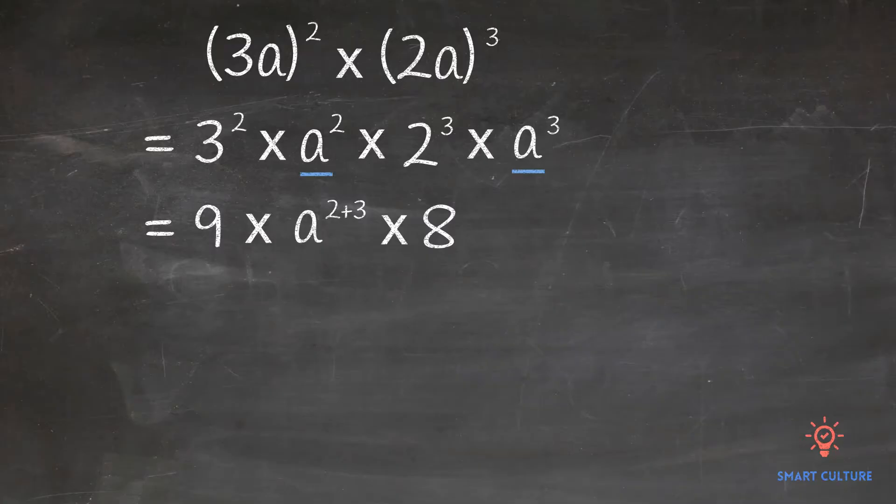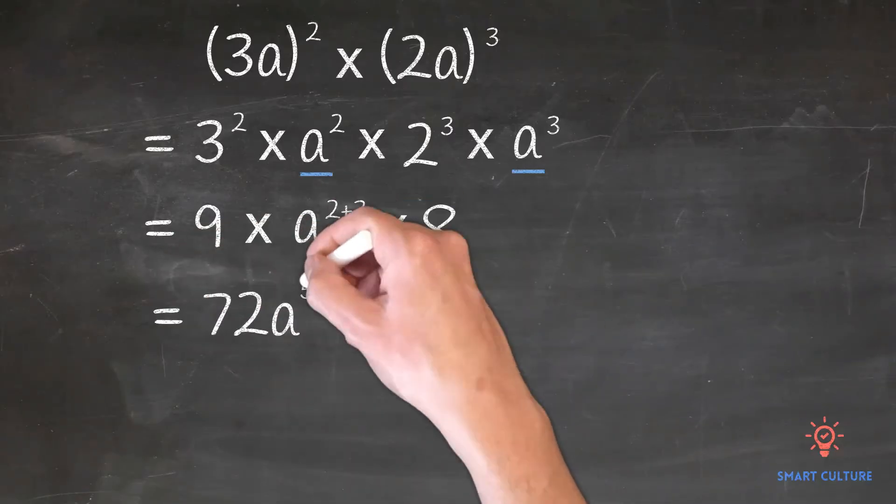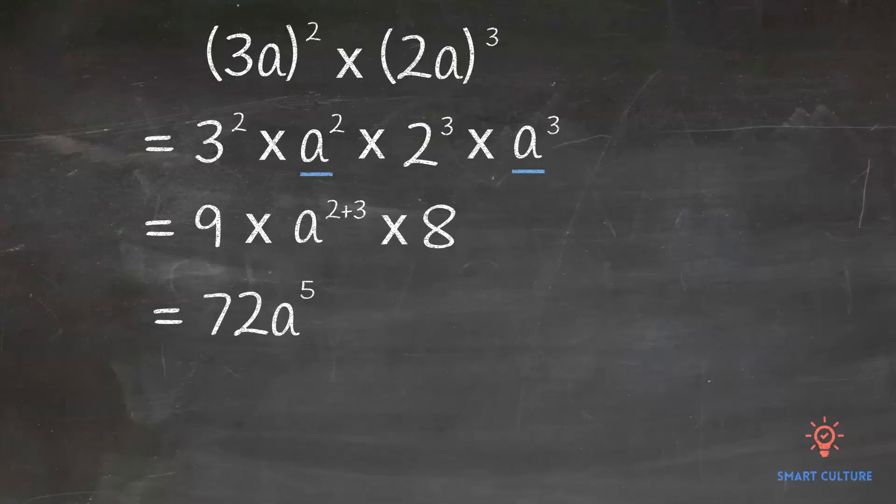Now we have to multiply 9 and 8. That equals 72. 2 plus 3 equals 5. So the final answer will be equal to 72a to the power of 5.